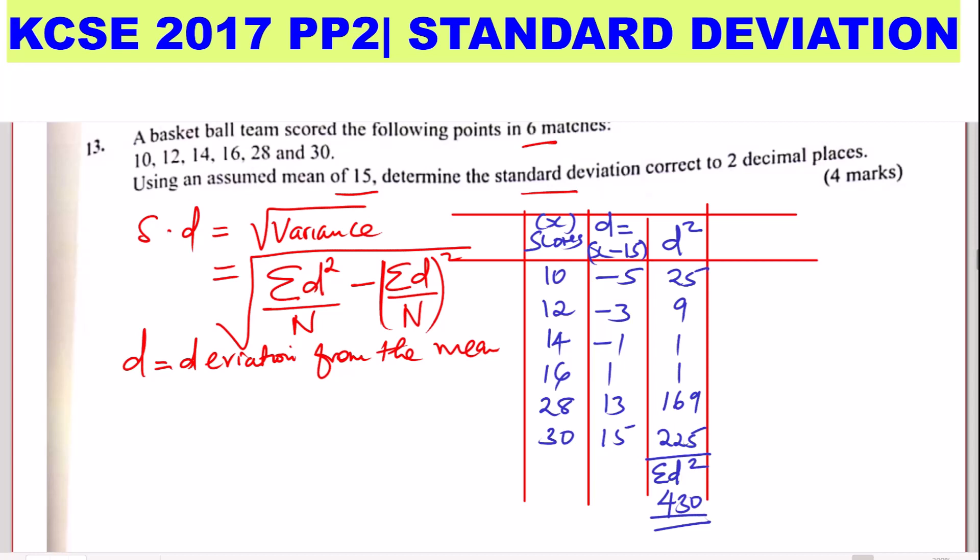Then N, in this case, we said N is the number of matches. The number of matches are 6. And the summation of D. So the summation of D here: negative 5 plus negative 3 plus negative 1 plus 1 plus 13 plus 15. This will give 20. That will give 20.